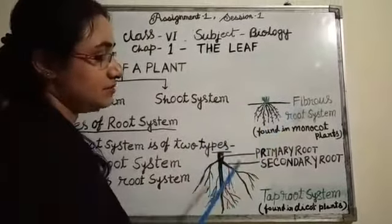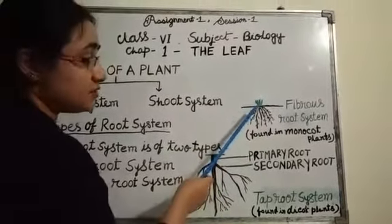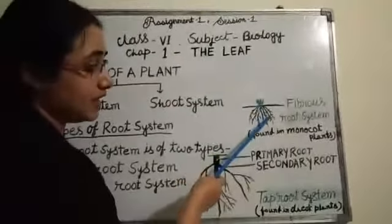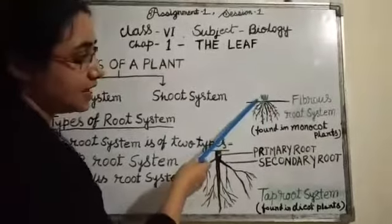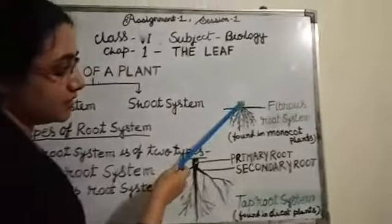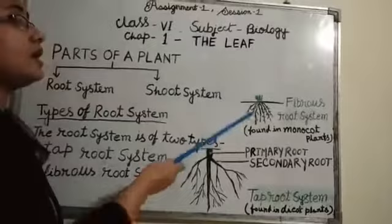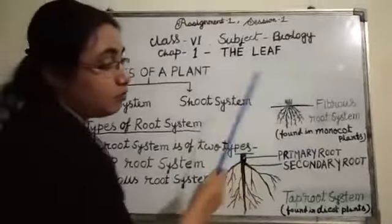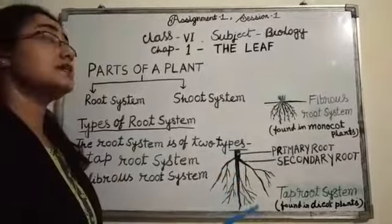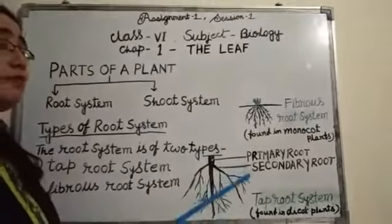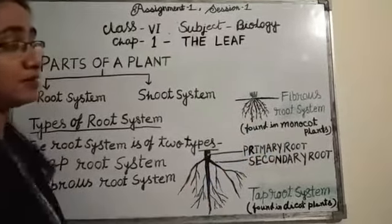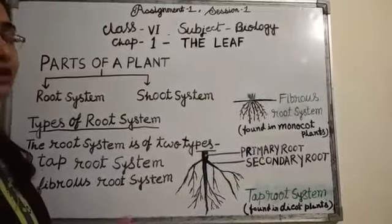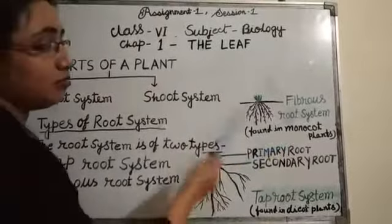Fibrous root system. The fibrous root system has a cluster of roots of the same thickness and size arising from the base of the stem. This type of root system is found in monocot plants such as rice, grass, and maize. Plants having one cotyledon in their seeds are called monocot plants.